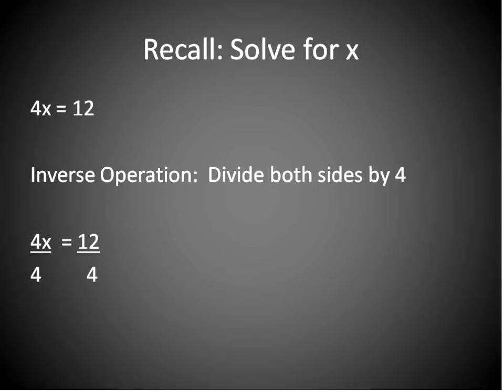When we do this, the 4 right here cancels out with this 4. Four divided by 4 is 1. One times x will leave us just with x, and then 12 divided by 4 is equal to 3. So that'll be our final answer there, x is equal to 3.